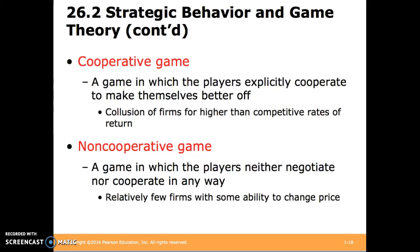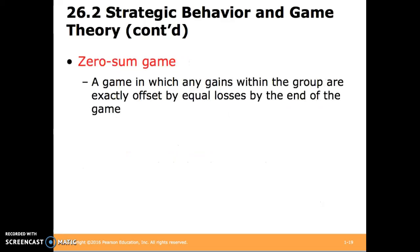There are several categories of games to consider. A cooperative game is a game in which the players explicitly cooperate to make themselves better off — for example, collusion of firms for higher than competitive rates of return. Non-cooperative games are games in which the players neither negotiate nor cooperate in any way, involving relatively few firms with some ability to change price. A zero-sum game is one in which any gains within the group are exactly offset by equal losses — if any particular person gains, there must be a corresponding loss by someone else within the game.